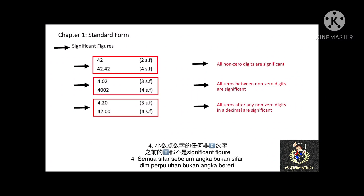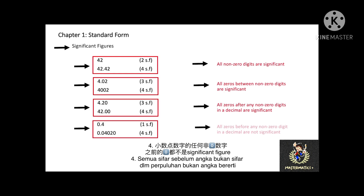Next, all zeros before any non-zero digits in a decimal are not significant. For example, 0.4 is 1 significant figure, and 0.04020 is 4 significant figures.